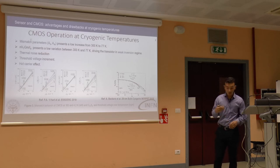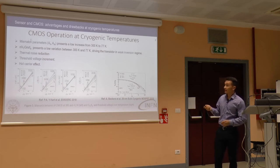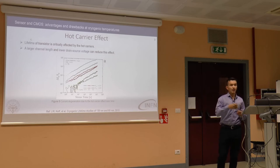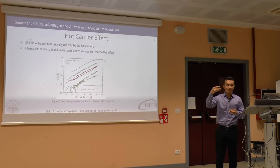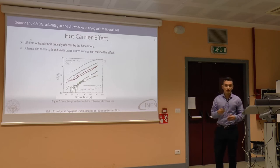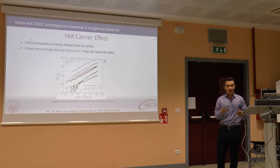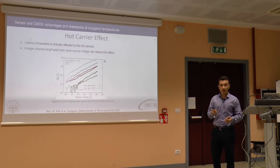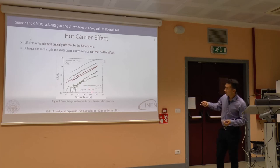Unfortunately, there are some disadvantages that can be overcome with good design techniques, such as threshold voltage increments and hot carrier effects. The hot carrier effect occurs when carriers — electrons and holes — jump from the channel to the silicon oxide and modify internal parameters of the transistor like the threshold voltage, creating low reliability in the circuit. To reduce hot carrier probability, we choose a channel length at least four times the minimum — for example, 0.4 micrometers in a 130-nanometer technology.